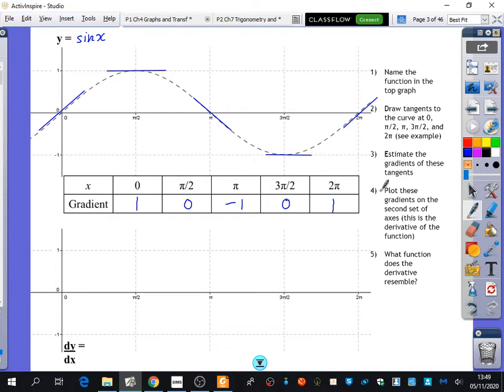So when I'm now going to - for point four I've said I want you to plot these gradients on the second set of axes. And what I'm plotting now is the gradients, I'm plotting a gradient function, I'm plotting the derivative of the function. And then we're going to see what function we think it is. So at zero I think the gradient is one, at π/2 the gradient is zero, at π the gradient is minus one, at 3π/2 the gradient is zero, and at 2π the gradient is one.